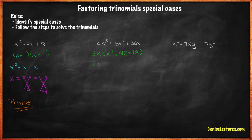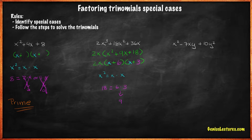The two integers whose product is 18 and their sum is 9 are 6 and 3. We write the answer as follows: 2x times (x plus 6) times (x plus 3).